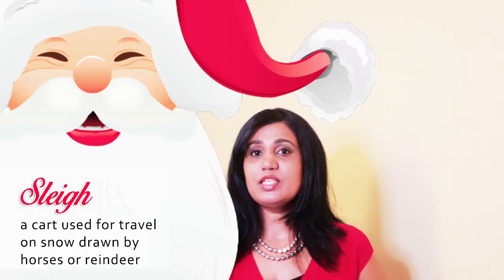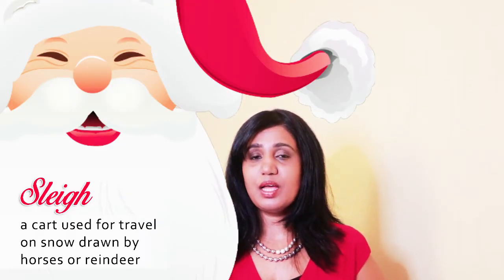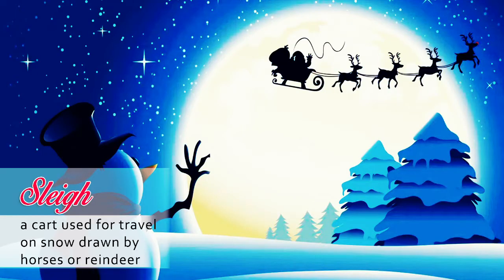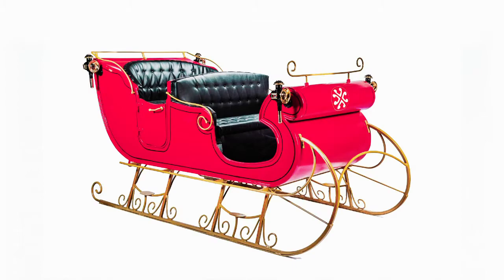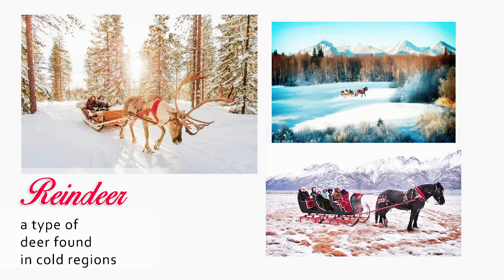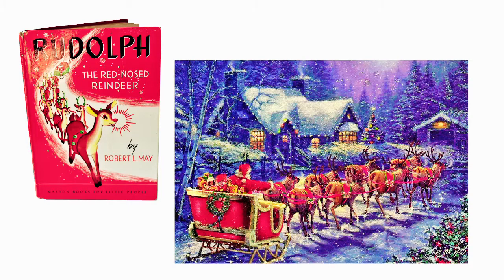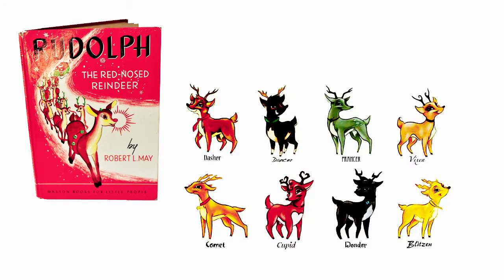Now let's talk about a few words related to Santa Claus. How does Santa travel? Santa travels on a sleigh. A sleigh is a cart used to travel on snow and ice, usually pulled by horses or reindeer. Santa's sleigh is pulled by reindeer — there are eight reindeer that pull it. The most popular one is called Rudolph, and there are many popular songs and books about Rudolph the red-nosed reindeer.